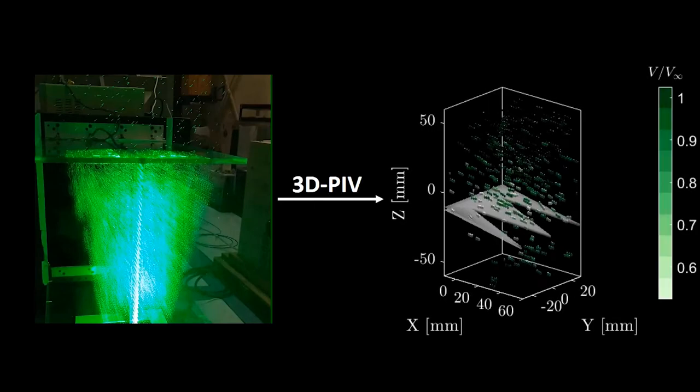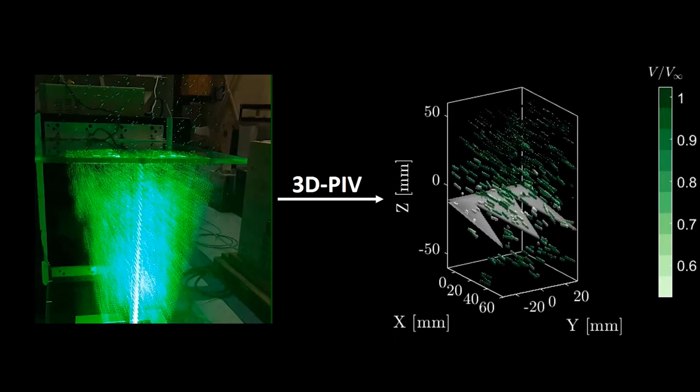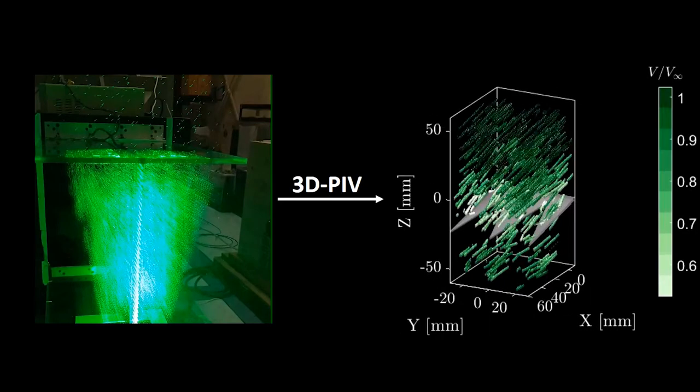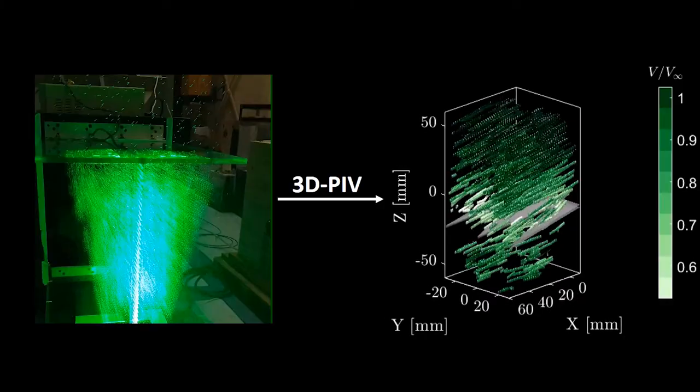Measurements of the flow are carried out using 3D particle image velocimetry. This technique combines particles mixed in the flow and illuminated by a laser, and several high-speed cameras recording and identifying the path of these particles. In this way, we can recreate in space and time the changes in the flow speed close to the serrations.